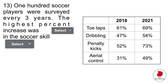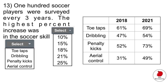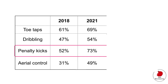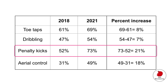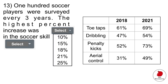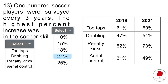The next drop-down menu question asks you to interpret a table: 100 soccer players were surveyed every three years, and the highest percent increase was in which soccer skill. Calculate the percent increase for each skill by subtracting the percentages from 2018 to 2021. Toe taps show an 8% increase, but the highest percent increase is in penalty kicks at 21%.